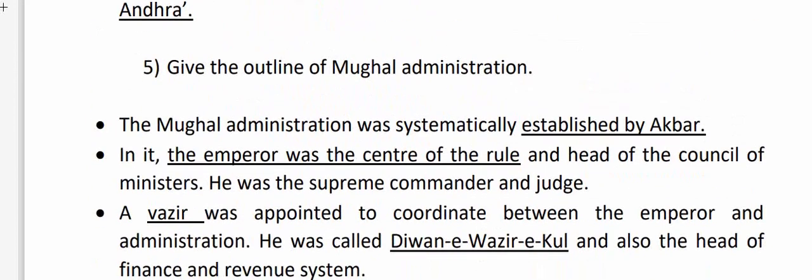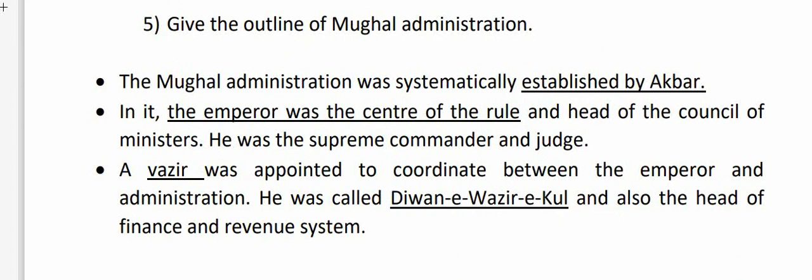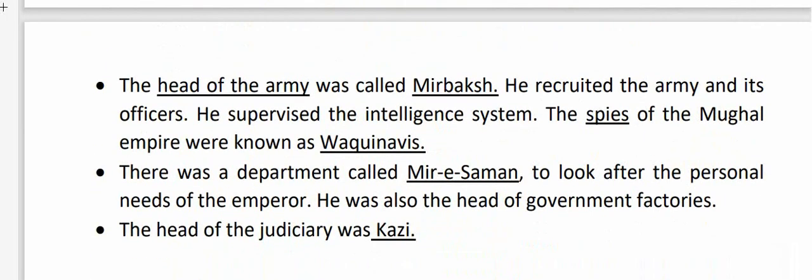Question 5: Give the outline of Mughal administration. The Mughal administration was systematically established by Akbar. The emperor was the center of rule and head of the council of ministers, the supreme commander and judge. A Wazir was appointed to coordinate between the emperor and administration — he was called Diwan-i-Wazir-i-Kul and was also head of the finance and revenue system. The head of the army was called Mir Bakshi, who recruited the army and its officers and supervised the intelligence system. The spies of the Mughal Empire were known as Vakyanavis. There was a department called Mir Saman to look after the personal needs of the emperor and head government factories. The head of the judiciary was the Qazi.